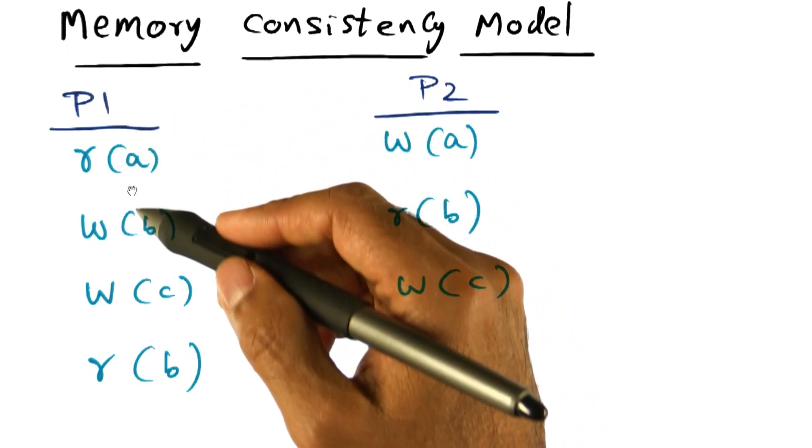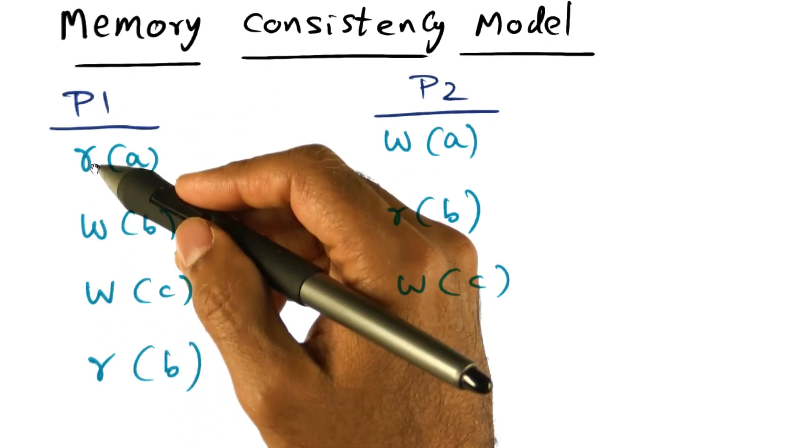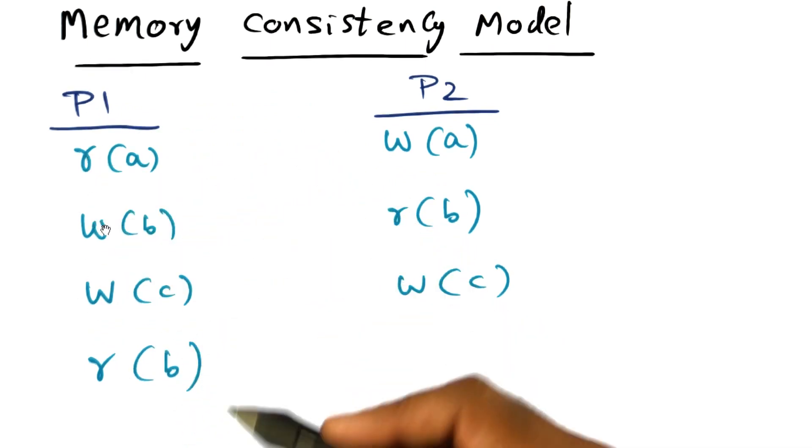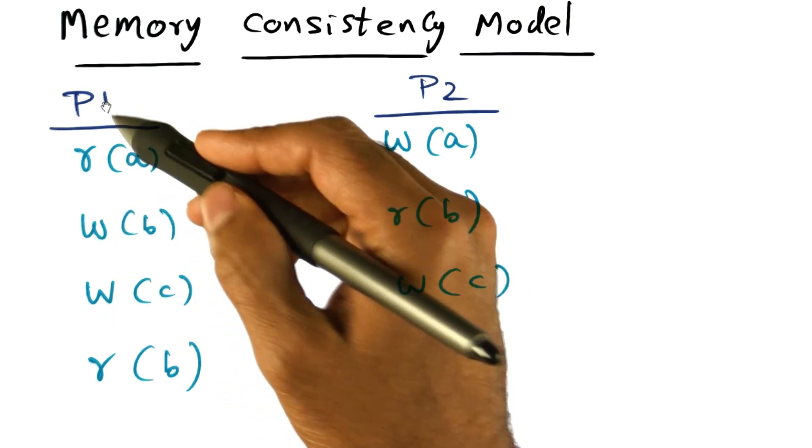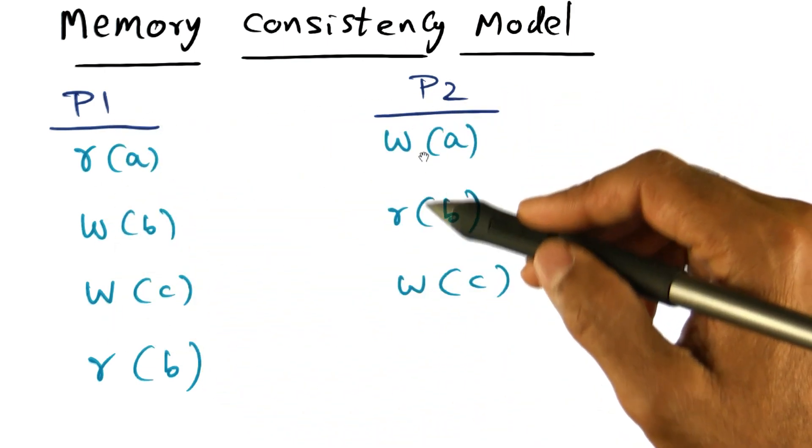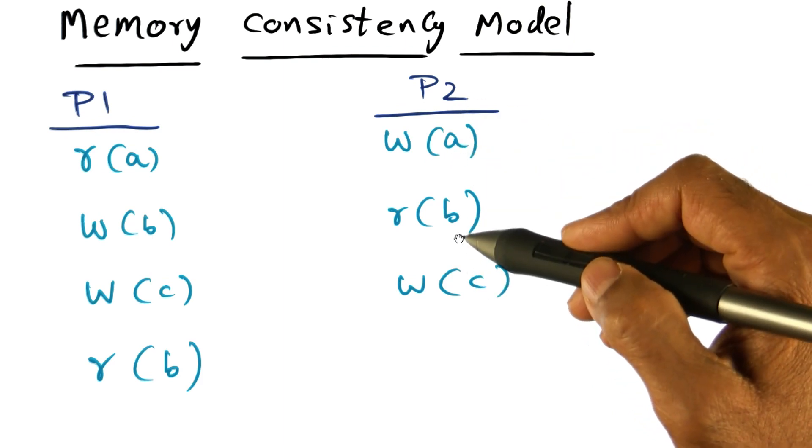So here I'm showing you a set of accesses, memory accesses done on processor P1, read access and write access and so on. And these are the memory locations being touched by these accesses on P1. And on P2 I'm showing similarly a set of accesses, two shared memory locations.